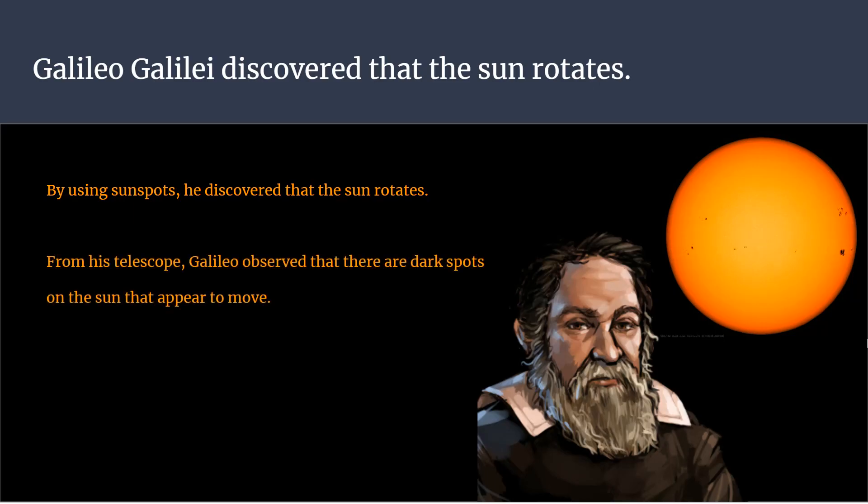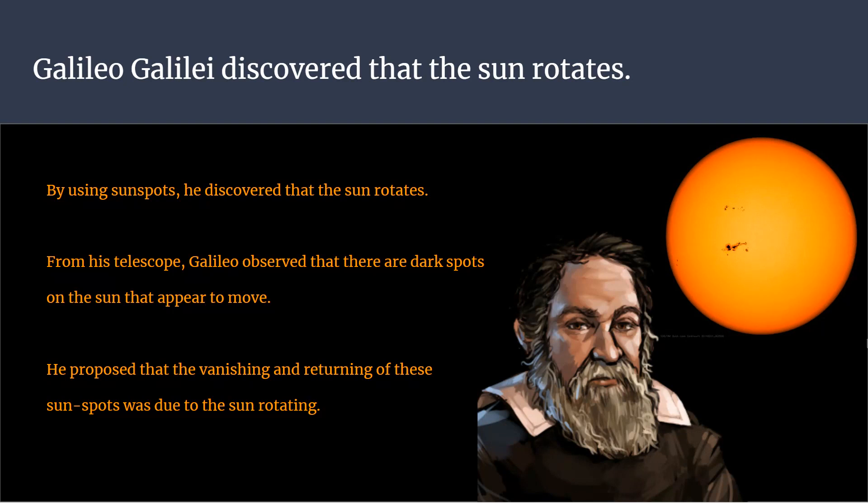From his telescope, Galileo observed that there are dark spots on the sun that appear to move. He proposed that the vanishing and returning of these sunspots was due to the sun rotating.